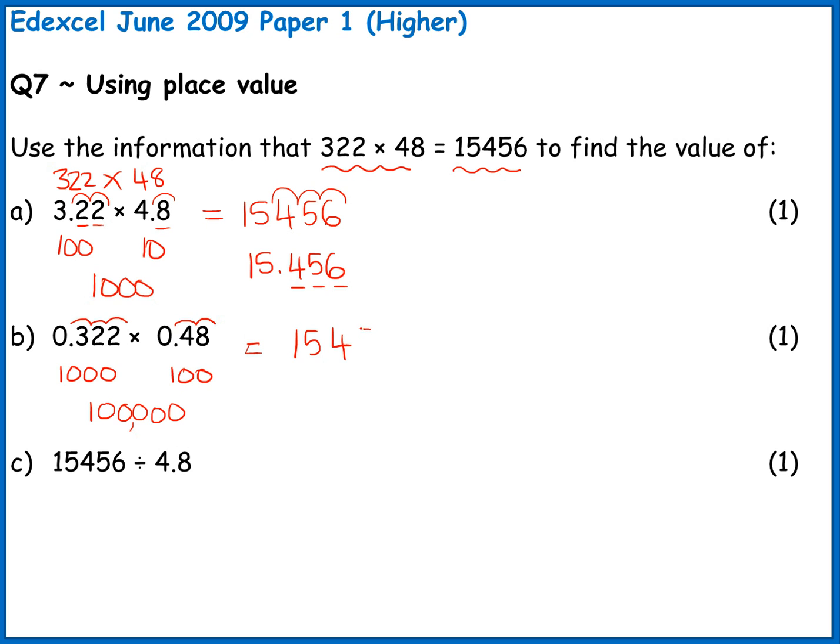So I'm going to have the same digits in my answer but I'm going to need to shift this 1, 2, 3, 4, 5 decimal places. So 1, 2, 3, 4, 5. So my answer will be 0.15456.